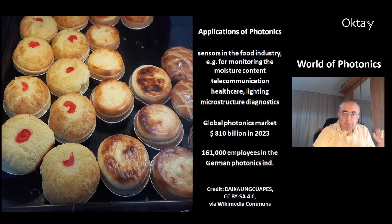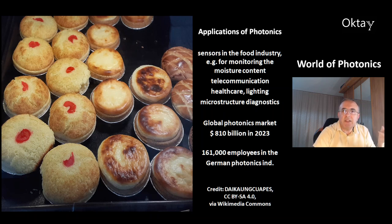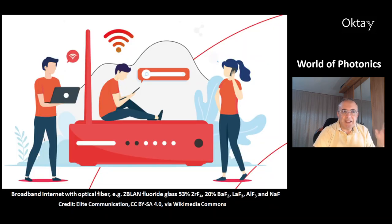These are examples of applications of photonics: sensors in the food industry, for example for monitoring moisture content; the telecommunication industry; healthcare; lighting; and microstructure diagnostics. The global photonics market in 2023 was an 810 billion US dollar market. In the German photonics industry alone there are 161,000 employees. Another important application is broadband internet with optical fiber.